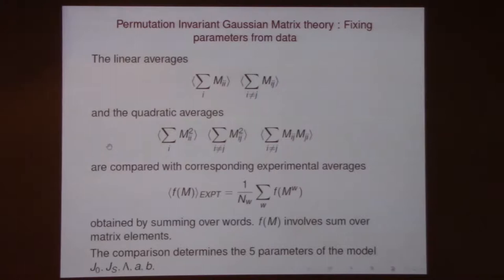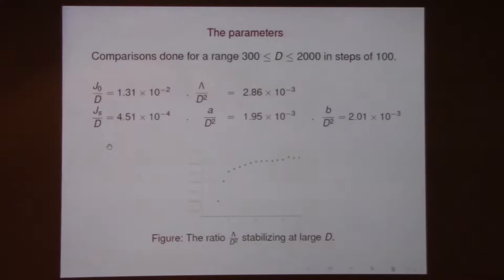Once you fix the Gaussian model, this is roughly what the parameters look like. Interestingly, these parameters have some simple scaling behaviors as you increase D. For example, λ/D² or a/D² tend to approach a constant. D is the number of context words. It would be nice to understand if you can build a model to explain this. This data comes from texts — from a corpus of online written material.